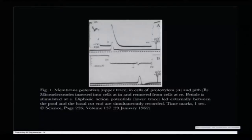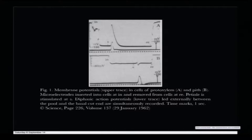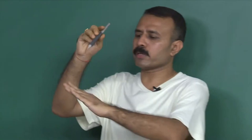Referring to the slide: membrane potentials in the upper trace are in cells of proto-xylem, which was the contention of Sibioka. The lower trace shows a micro-electrode being inserted into cells at 'in' and removed at 're'. When the petiole is stimulated at 'S', you can see the stimulation clearly, and a diphasic action potential is simultaneously recorded externally between the pool and the basal cut. Going through the original Science paper will make everything clear. This is how the recording works — depending on the depth of electrode insertion you get different kinds of recordings.